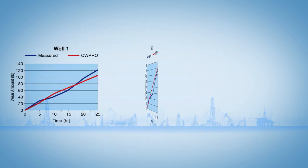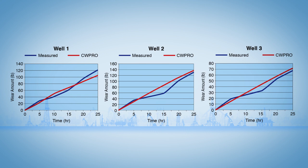This case study shows a comparison between the measured weights of metal shavings and the calculated casing wear amounts for three wells using CW Pro.